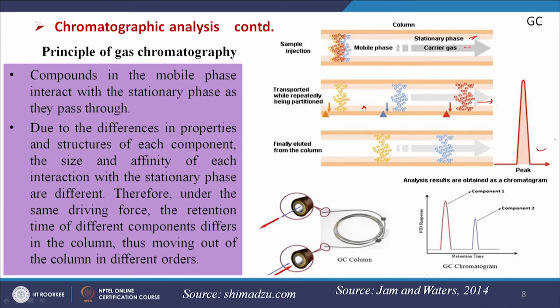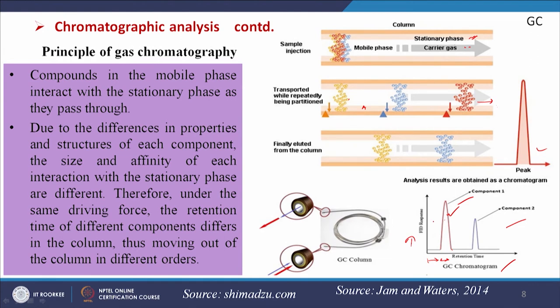This is the GC chromatogram showing component one and component two. The component with less retention time comes first — it has less interaction with the stationary phase. If we use standard samples and measure the time required to get each peak, we can match the retention time to known values to identify what compound is present. For multiple components, we can identify multiple peaks. This is qualitative analysis; we can also do quantitative analysis by measuring the area of the peak.